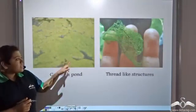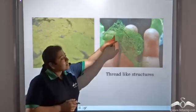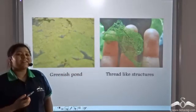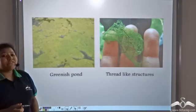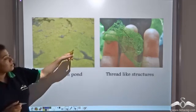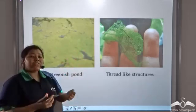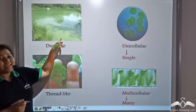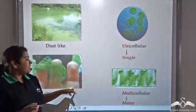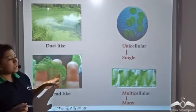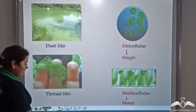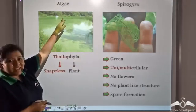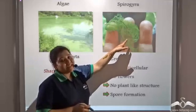Have you seen greenish dirty ponds or filamentous structures which are green? Both these structures are green and hence they are classified as plants, but they do not have plant-like structures. They have a dust-like appearance, whereas the other has a thread-like filamentous appearance. The dust-like green plants floating on the pond are unicellular, and these branched thread-like structures are multicellular. The dust-like plants are known as algae, and the filamentous green plants are known as Spirogyra.